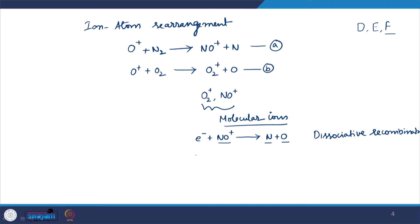The most important aspect of dissociative recombination is that it is very fast — it removes electrons at a much higher speed compared to any other process. If more molecular ions are available in the ionosphere, electron density is removed much more quickly. But if molecular ions run out, the remaining atomic ions require a lot of time for recombination. So the extent of molecular ion concentration decides whether a particular ionospheric layer survives during nighttime.